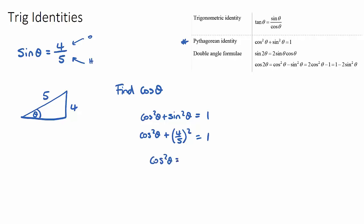Cos²θ + 16/25 is equal to 1. If I subtract the 16/25 over, I'll get cos²θ is 1 minus 16/25. Now 1 is the same as 25/25. So if I subtract 16/25, I will get 9/25.